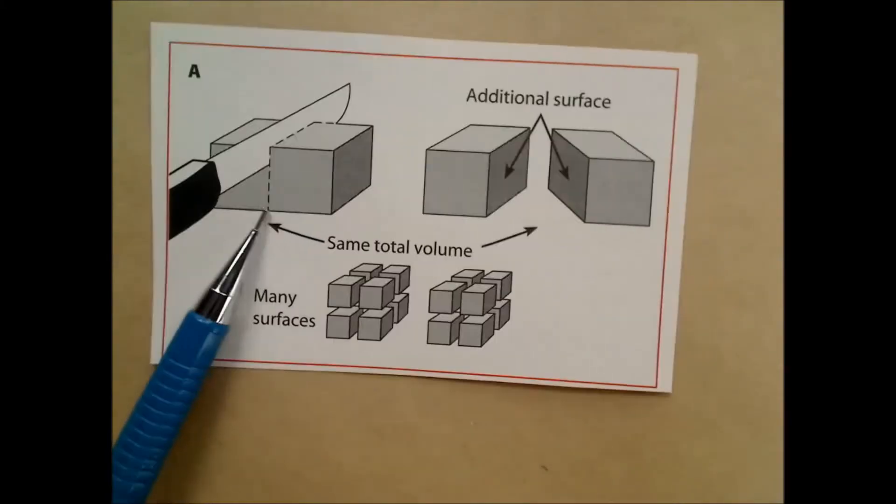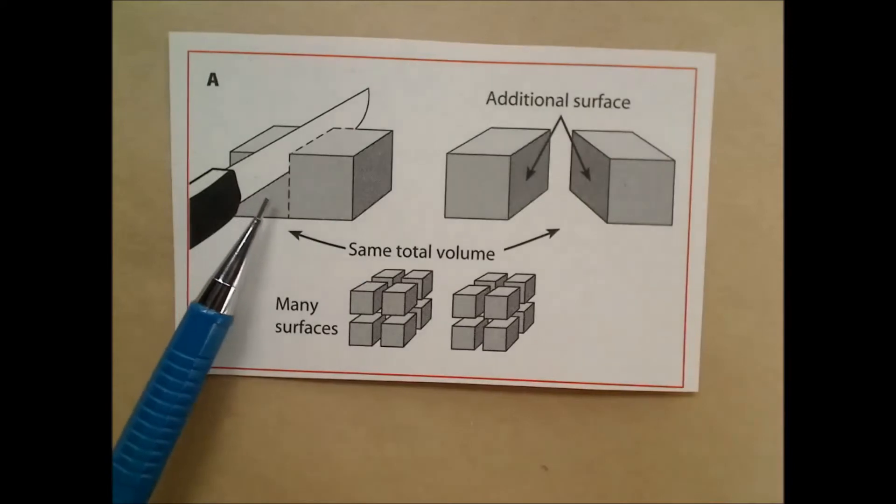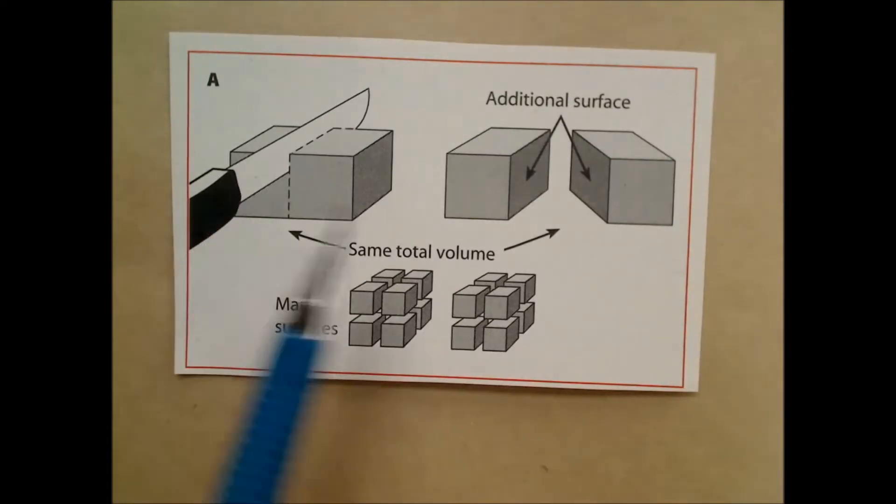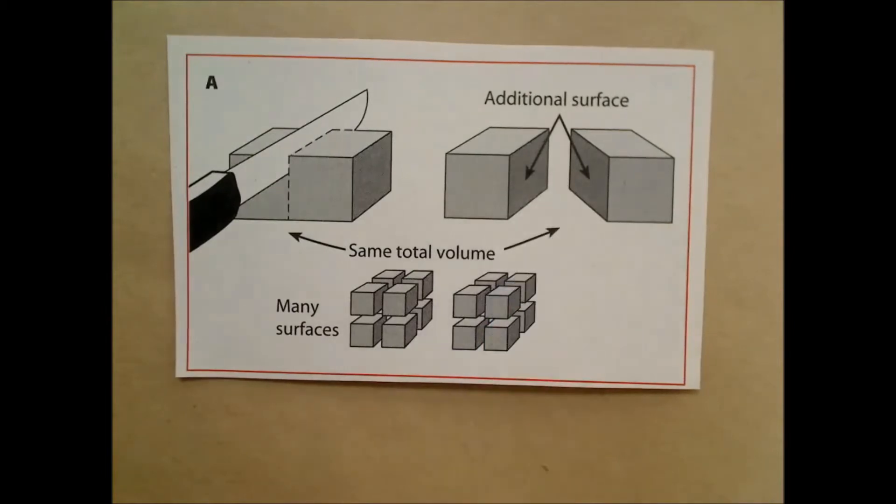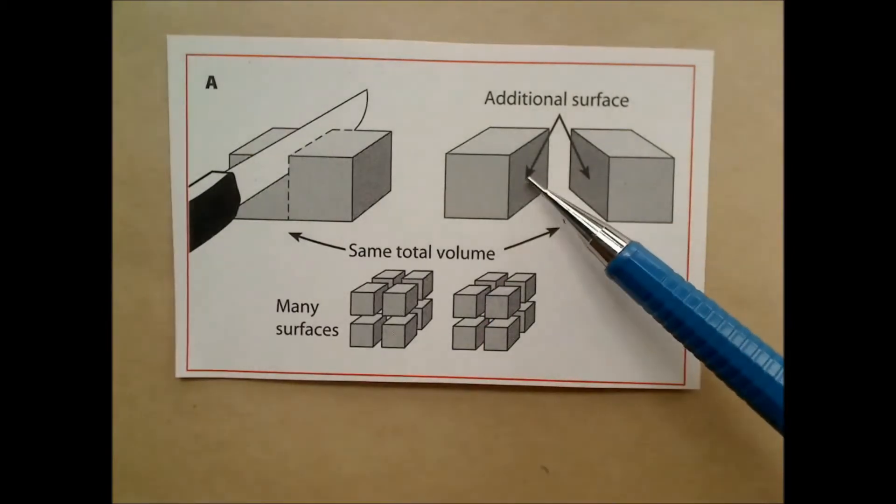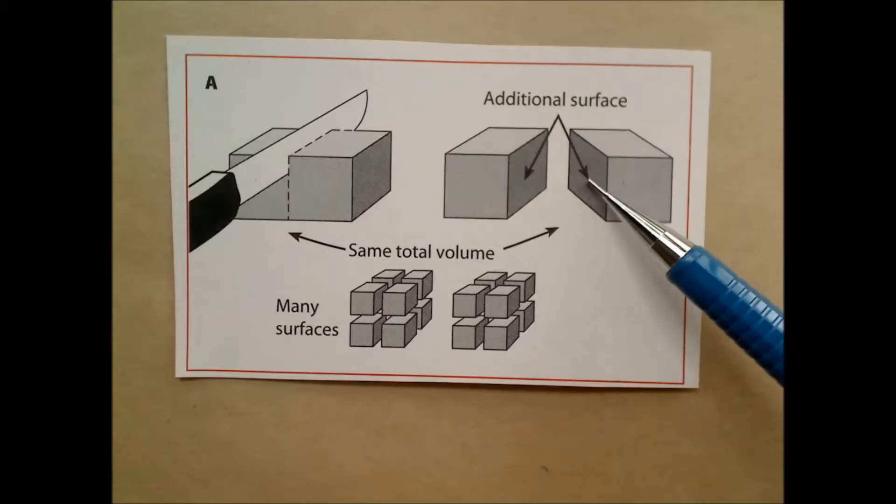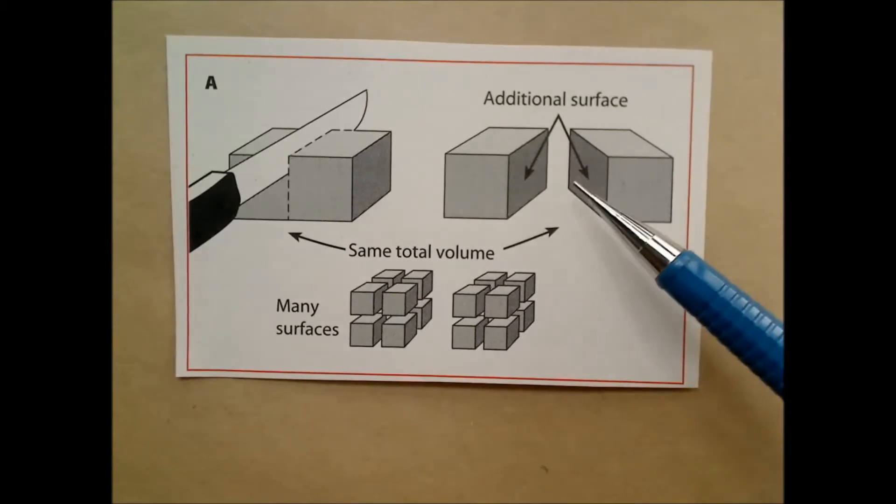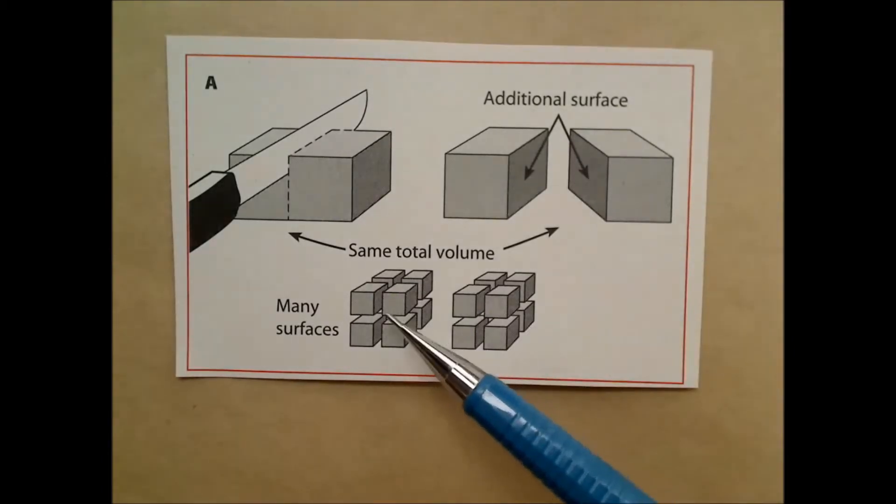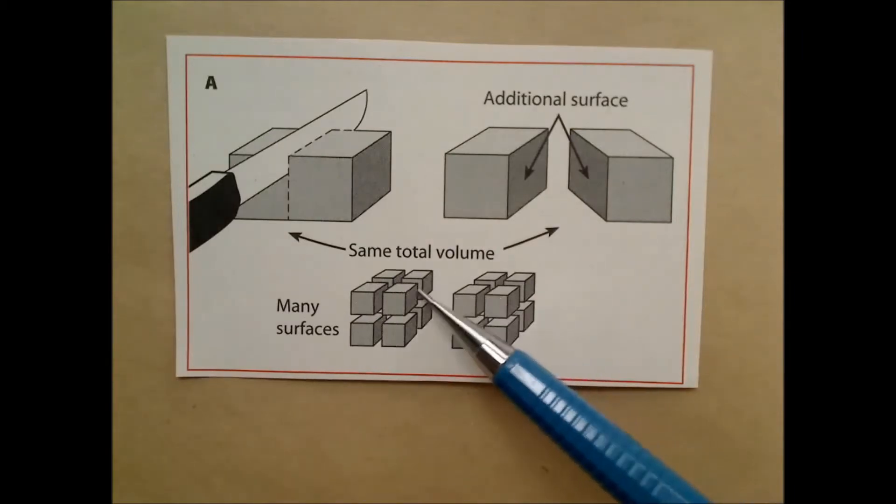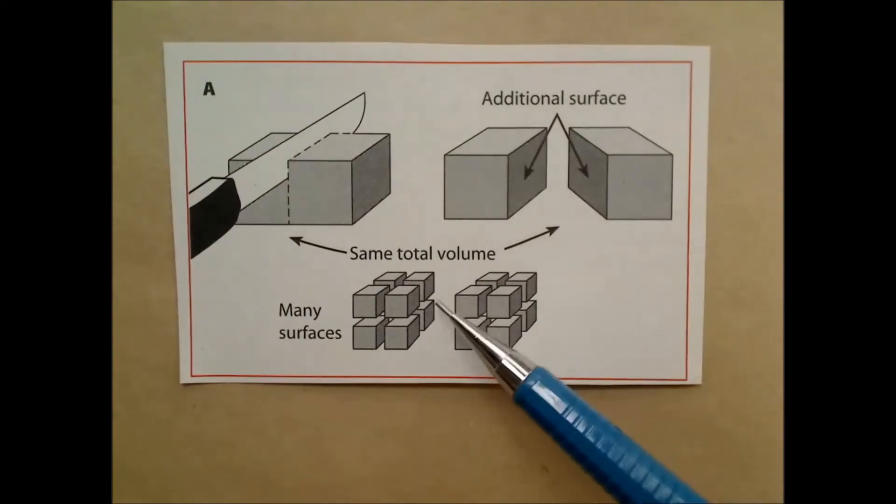Let's say you start out with this big cube here. The surface area exposed to the air in this case are the six sides. But if you cut it like this, now you increase the surface area that would be exposed to air. This side and this side now increase the surface area. If you keep cutting it, all the surfaces here that are exposed in all of these little cubes is a lot more.